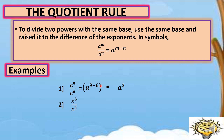Next, x raised to 6 divided by x raised to 2. They have the same base, which is x. So just copy x, then subtract 6 and 2. We write it as x raised to 6 minus 2, and the answer is x raised to 4.